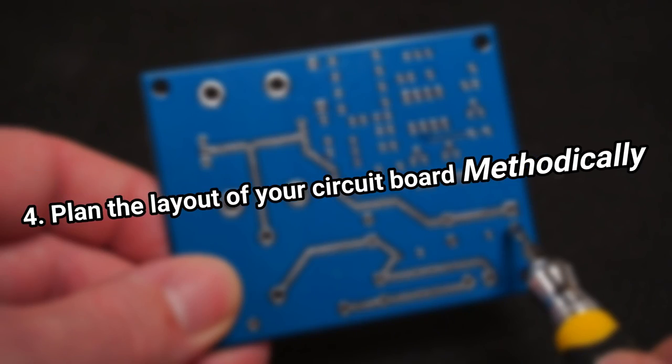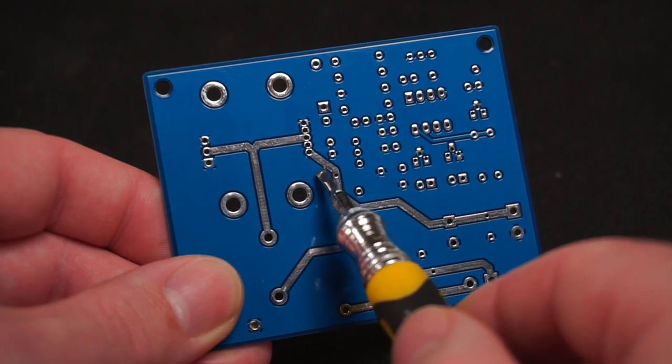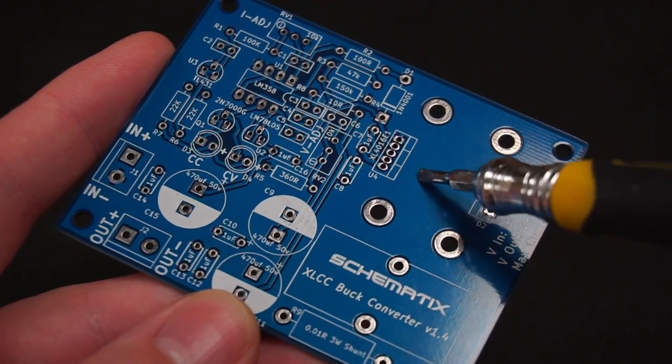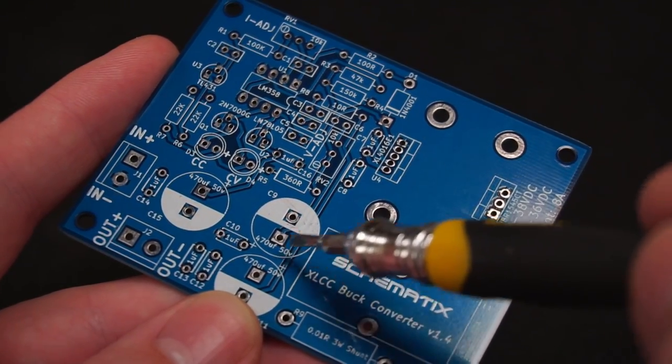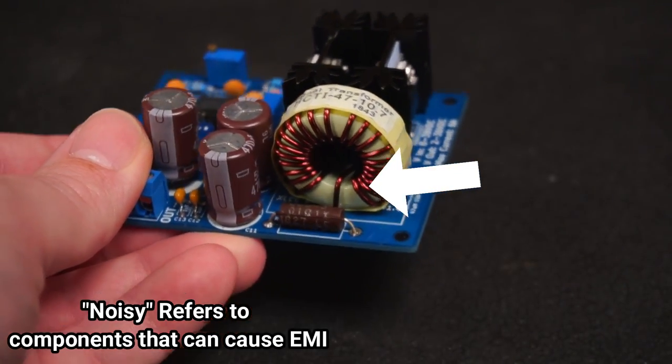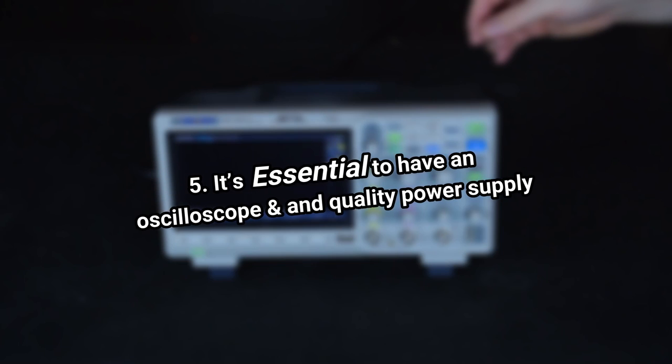Tip 4: Plan the layout of your circuit board methodically. Keep all the PCB tracks as short as possible. Lay down top and bottom ground planes to soak up unwanted EMI noise. And keep noisy components such as the inductor and flyback diode away from other sensitive components.